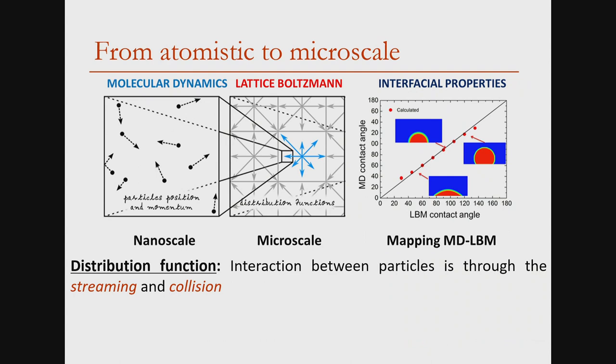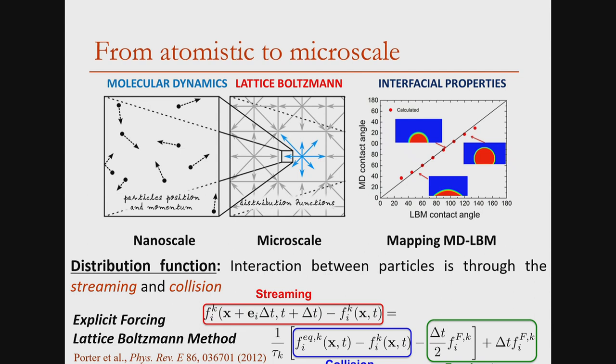For the first step, you derive potentials based on ab initio dynamics, an approach I learned here in Trieste. You use DFT with Van der Waals corrections, then create an effective potential fitted from DFT. In this case, I set aside the full electronic structure — apologies at a total energy conference — however, the forces that describe the system are those derived by ab initio methods.